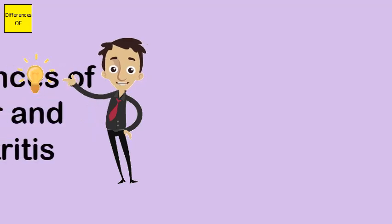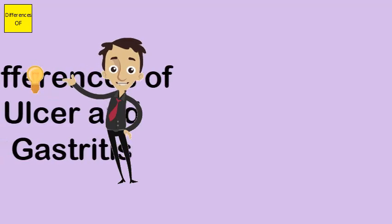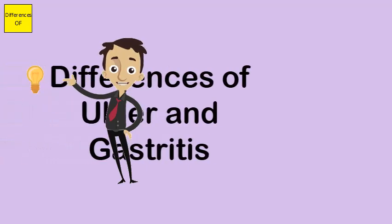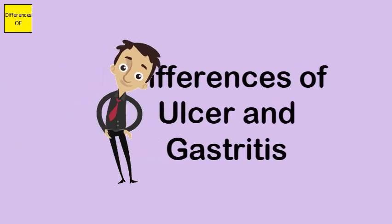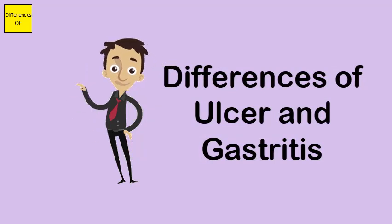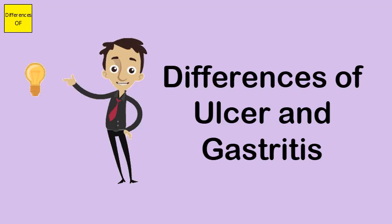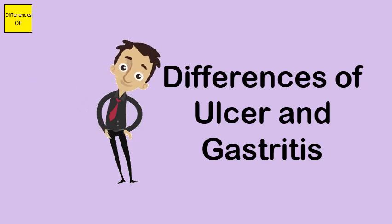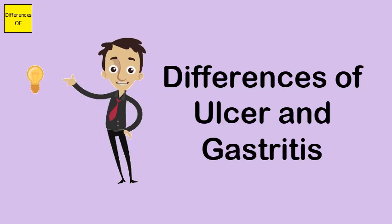The difference between ulcer and gastritis: an ulcer is a scarring of the surface of an organ or even the skin. Gastritis is a disease of the stomach in which there is inflammation. Ulcer signs and symptoms include copious vomiting.